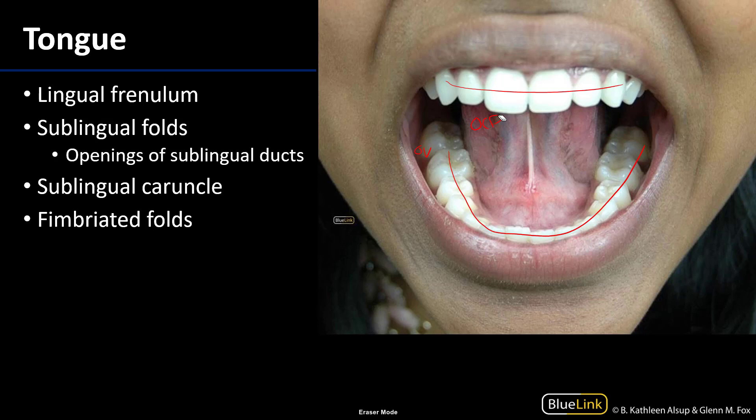Now I'd like us to turn our attention to the floor of the mouth. It's this horseshoe-shaped region here, and in this particular image, this individual has been asked to raise their tongue to touch the roof of their mouth. As a result, we're looking at the ventral side of the tongue and the floor of the mouth.